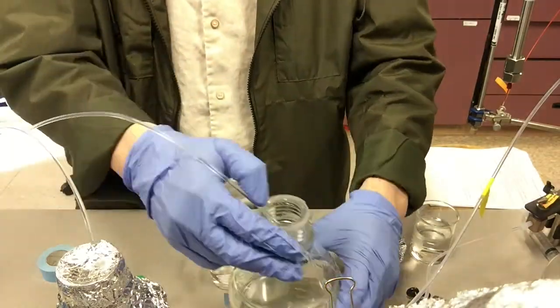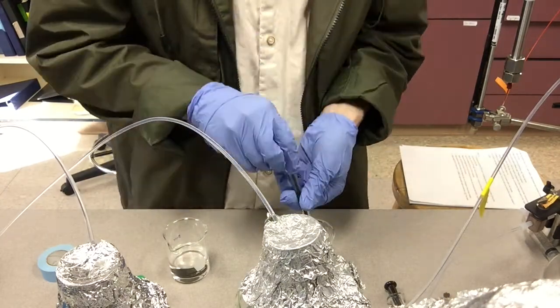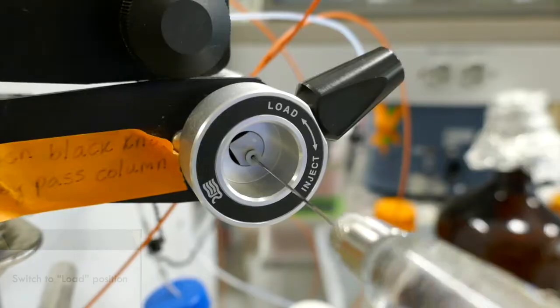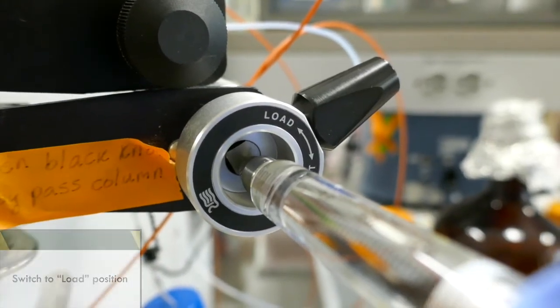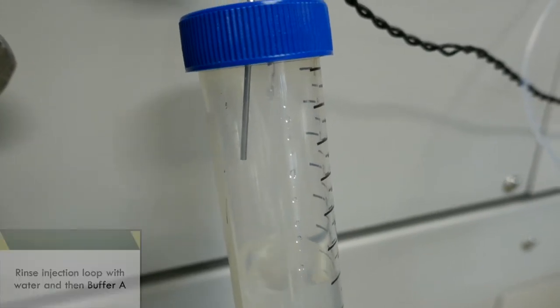Next, you're going to rinse the injection syringe with water and then with buffer A. With the injection loop in the load position, inject several loop volumes of A with a clean syringe.